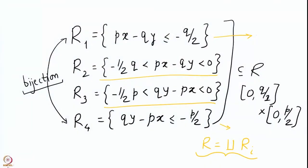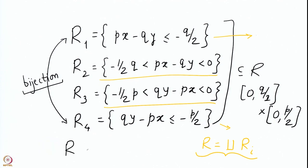So when you take powers of minus 1, the power of minus 1 is not going to change whether you keep the power to be only the number of lattice points in R2 and R3, or whether you keep it to be the whole rectangle R. We also noticed that the number of lattice points in the whole rectangle R is (q−1)/2 × (p−1)/2.